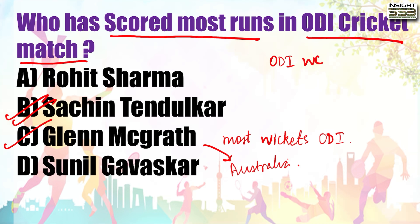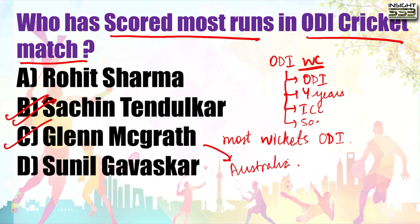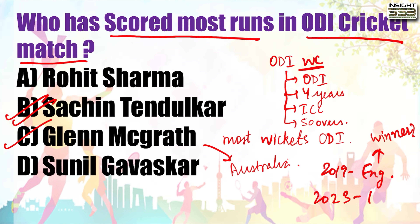If we talk about the ODI World Cup, this is in the One Day International format, held every 4 years, administered by the ICC, with 50 overs per team per match. In 2019 this game was conducted in England. You will tell me who the winner was. For 2023, the World Cup is going to be in India.